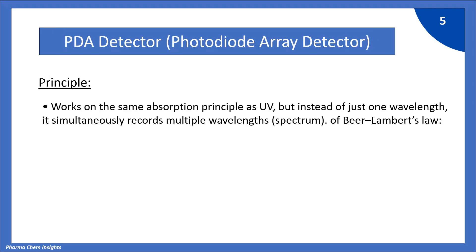Now let's see the principle of the PDA detector — that is, the photodiode array detector. It works on the same absorption principle as UV, but instead of just one wavelength, it simultaneously records multiple wavelengths, capturing a full spectrum.